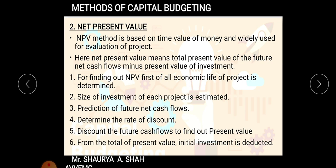The fifth step is discounting the future cash flows to find out the present value — we multiply the cash flows with the discounting rate to get present values. Finally, you total up all the present values and from that deduct the initial investment to get the net present value.